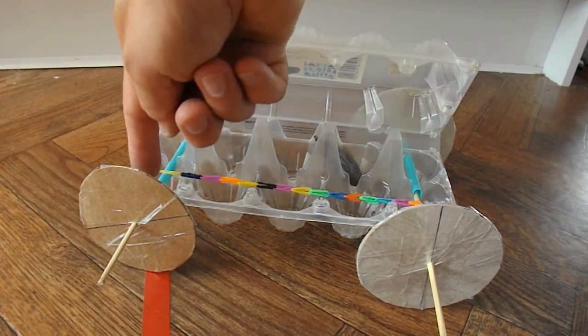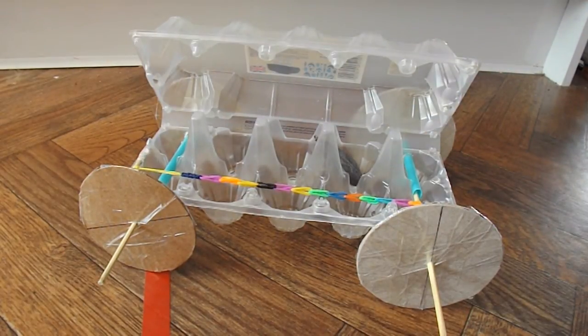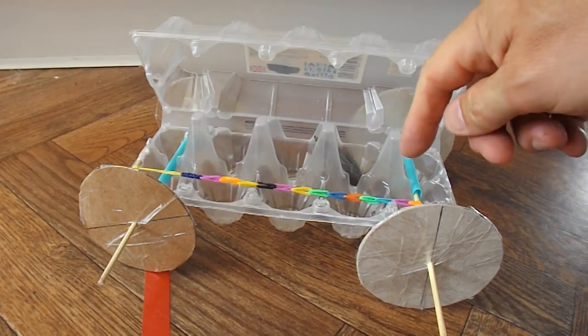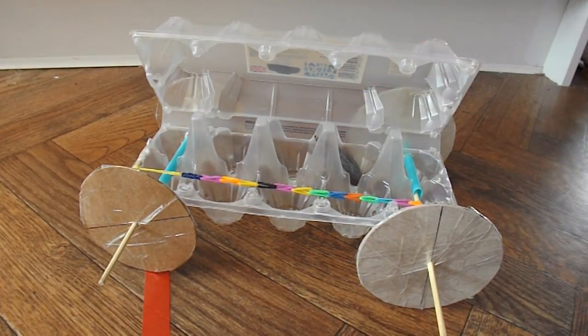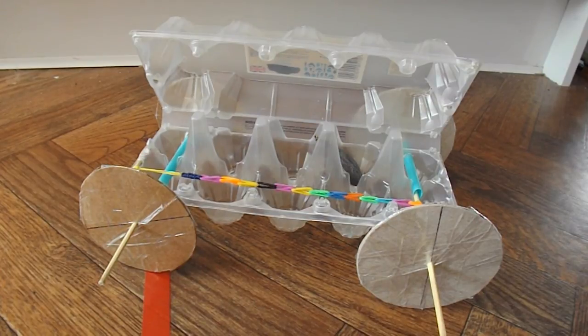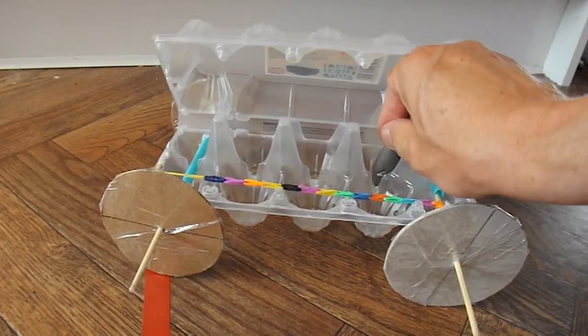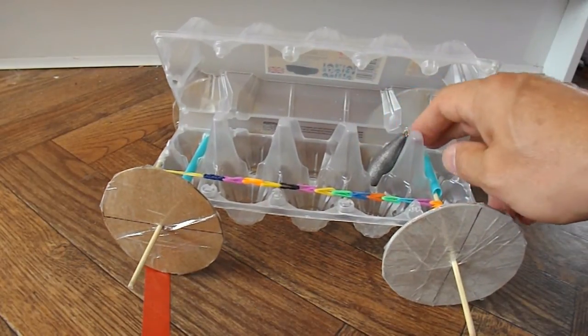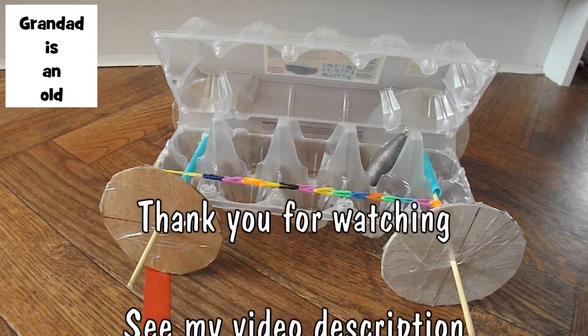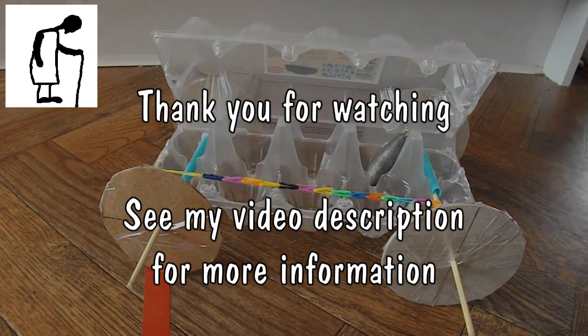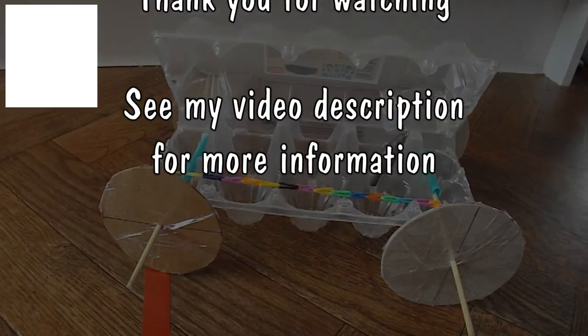We've got barbecue skewers for the axles. Drinking straws for the axle tubes. And I've used loom bands, but ordinary rubber bands would have been fine. That's the motor. And I've also got a four-ounce lead fishing weight sitting in there to hold the wheels on the ground and stop the wheel spin. And that's it. Job done.